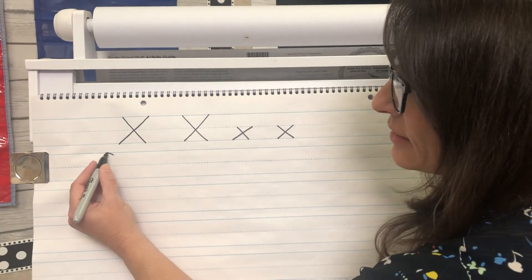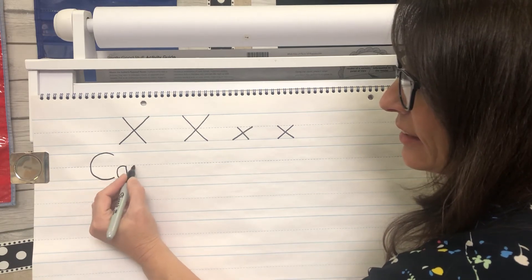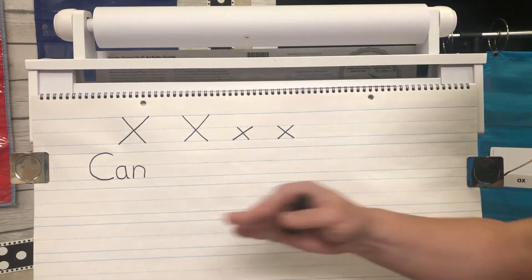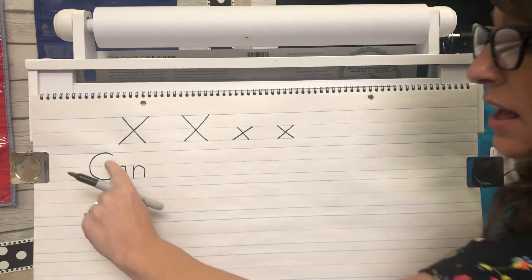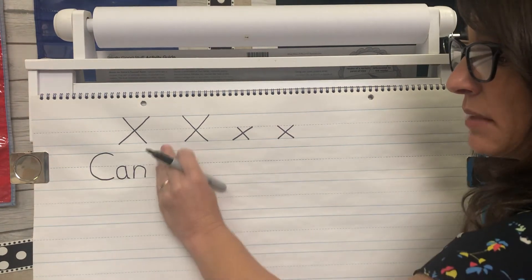Can C A N. And you can sound it out if you don't know. C A N. Can. And I started it with a capital C because it's the beginning of a sentence. Can make a space.